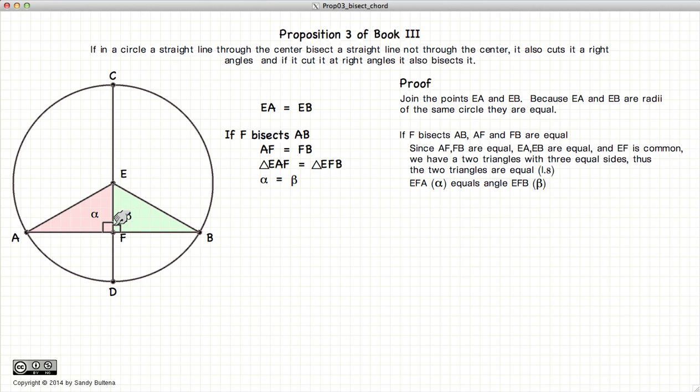Now, according to the definition, if we have a straight line crossing another straight line where the two angles are equal, then they are by definition right angles. So there we have, if F bisects AB, alpha and beta are right angles.